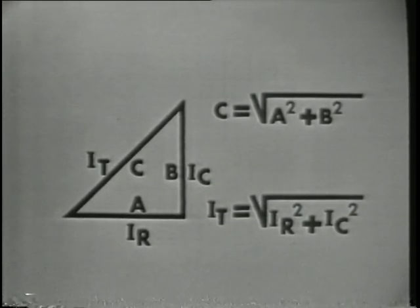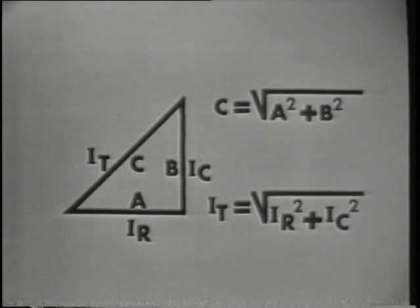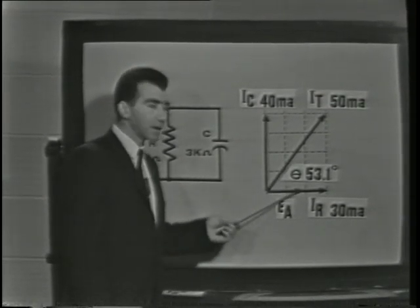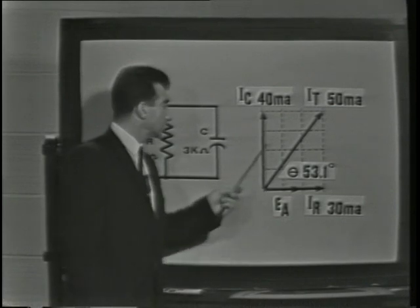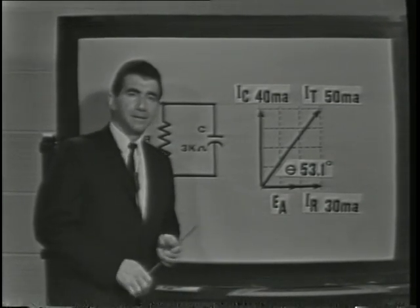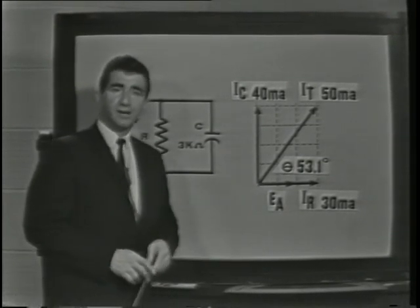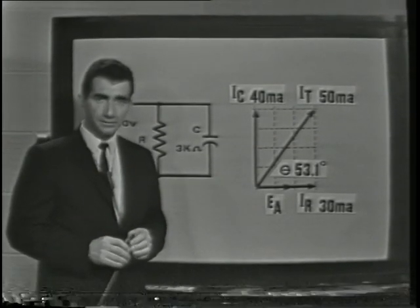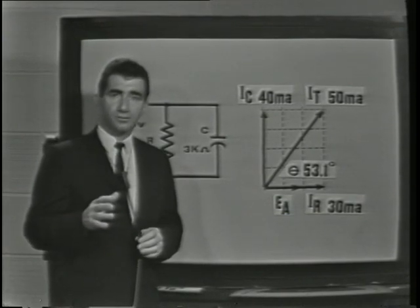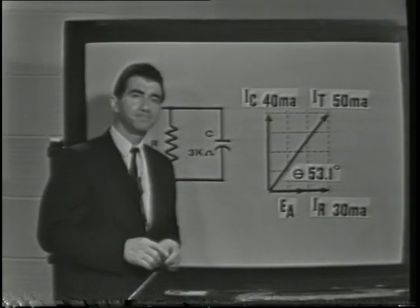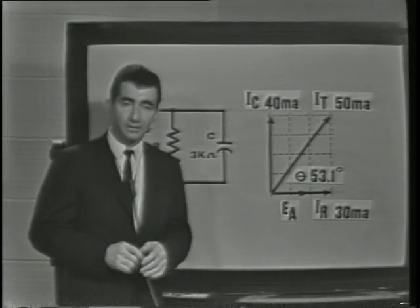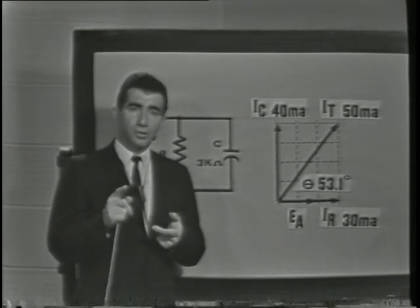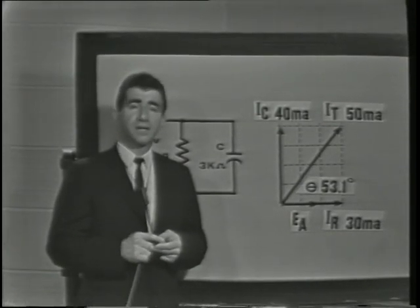This method is much more accurate than measuring the vector on the graph. The size of angle theta is determined by the size of the sides of our triangle, or by the amount of IC and IR. The relationship of the sides and angles have been calculated for almost every angle and put together in a table called trigonometric functions. The table of trig functions that are true for triangles are also true for our vector diagram and are a great help in solving even the most complex circuits. These relationships are called the sine, cosine, and tangent, and may be used to determine the angles of the triangle or the phase angle of our currents.